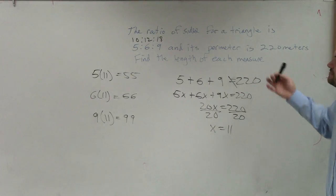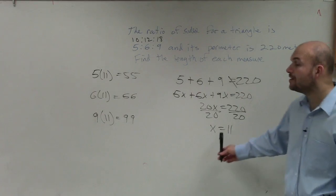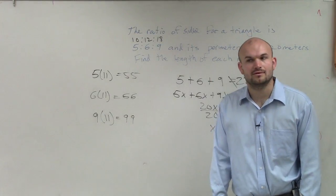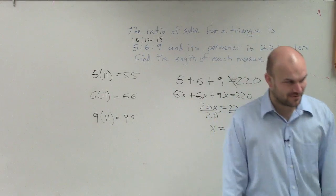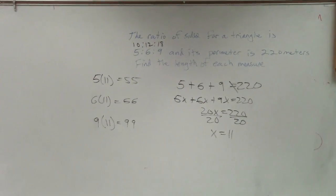Because if you did 50, 60, and 90, that would give you 200, but not 220. So x has to be 11, and these are going to be my side lengths. Cool? Okay. Got it, Asia? Good.